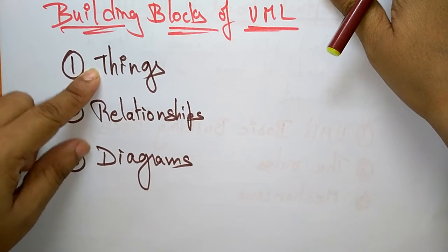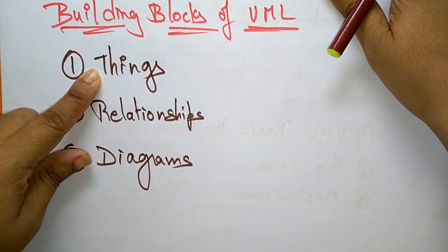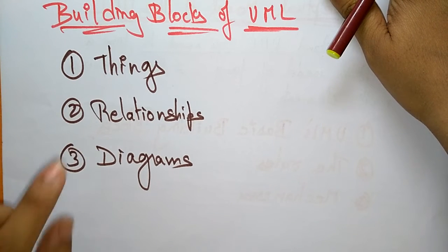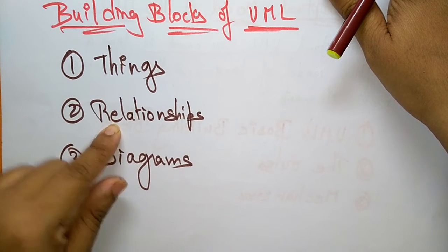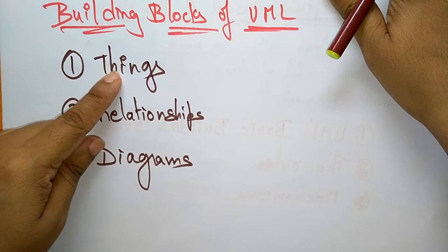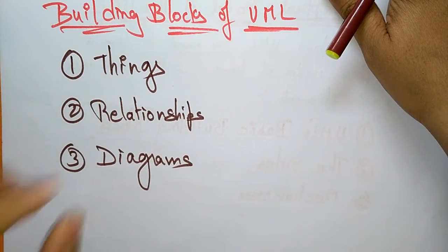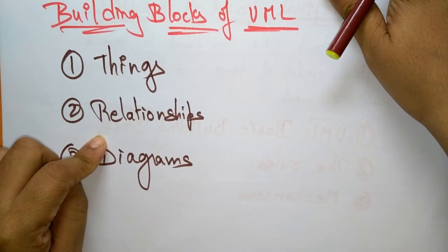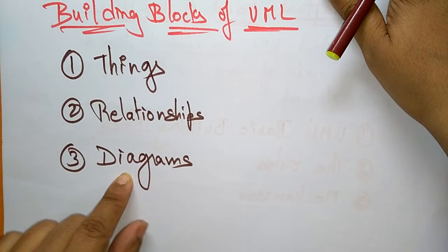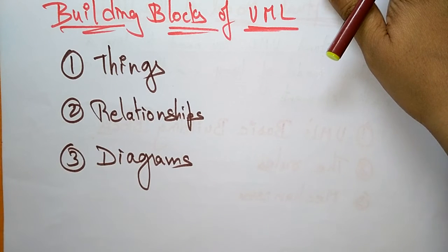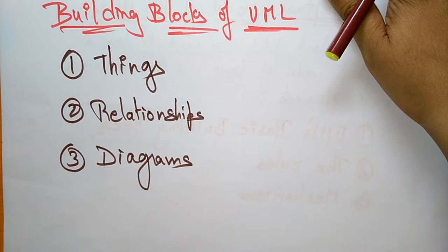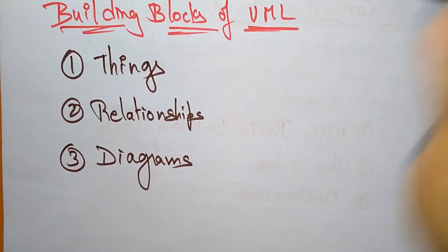Things are the abstractions that are first-class elements in the model, whereas relationships tie the things together — whatever things you introduce are tied together with the help of relationships. Diagrams group an interesting collection of things and relationships, forming the complete picture. These are the building blocks of UML.